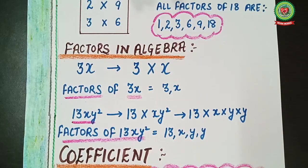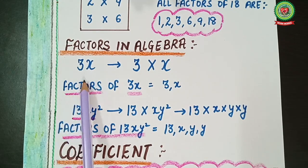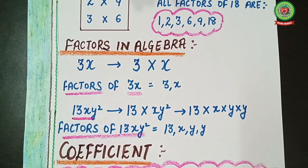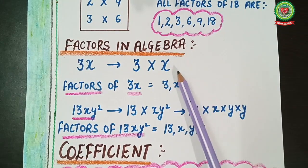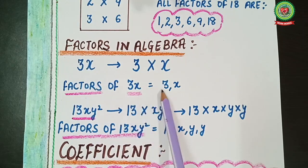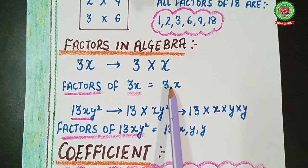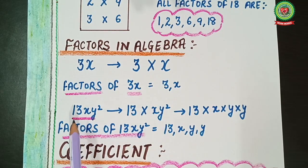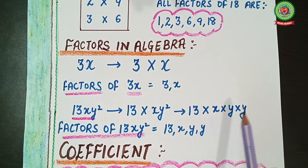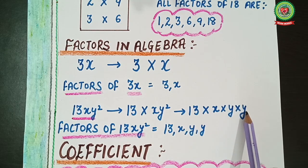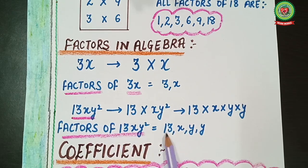In algebra, I have taken a term: 3x. We can factorize 3x by splitting it as 3 multiplied by x. So the factors of this term are 3 and x — the only possible factors. Similarly, for 13xy², we can split it as 13 × x × y × y, since y appears twice. So all the possible factors of 13xy² are: 13, x, y, y.